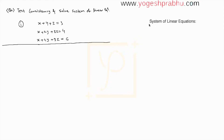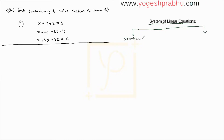In this video we will be discussing a system of linear equations. Systems of linear equations are mainly of two types. The first type is called non-homogeneous, and the other type is homogeneous. In a non-homogeneous equation, the system looks like Ax = b, whereas for homogeneous it is Ax = 0 — the right hand side is zero for homogeneous and a matrix b for non-homogeneous.